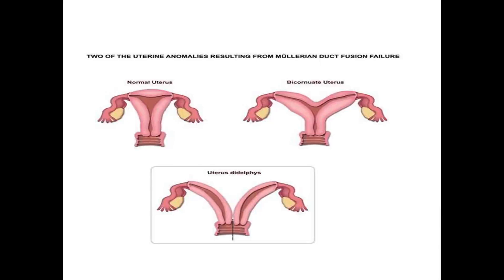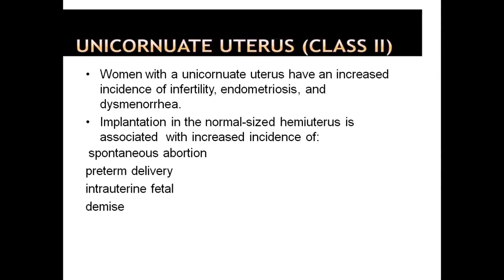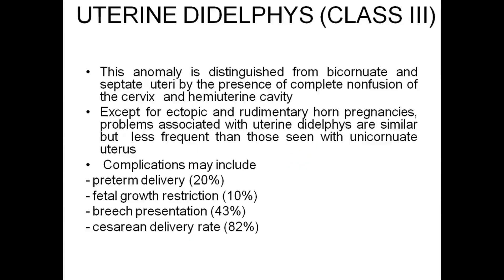Two types of uterine anomalies resulting from Mullerian duct fusion failures are bicornuate uterus and uterus didelphys (Class 2 and unicornuate uterus). Women with unicornuate uterus have increased incidence of infertility, endometriosis, and dysmenorrhea. Implantation in a normal-sized hemi-uterus is associated with increased incidence of spontaneous abortion, preterm delivery, and intrauterine fetal demise. Uterine didelphys is Class 3, distinguished from bicornuate and septate uterus by the presence of complete non-fusion of the cervix and hemi-uterine cavity. Except for ectopic and rudimentary horn pregnancies, problems associated with uterine didelphys are similar but less frequent than those in bicornuate uterus.